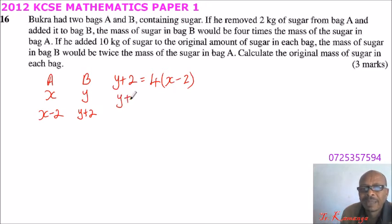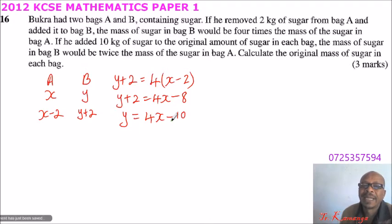You open the bracket, Y plus 2 is equals to 4X minus 8. Take 2 to the other side, we have Y is equals to 4X minus 10.